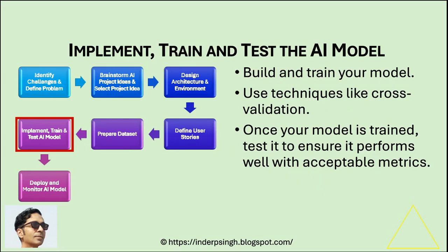Phase 6: Implement, train, and test the AI model. Use programming languages, libraries, and tools to build and train your model. For example, in machine learning projects like the anomaly detection project, you might implement an unsupervised learning algorithm to identify deviations from normal behavior in the software. Use techniques like cross-validation to ensure your model generalizes well to new or unseen data. Once your model is trained, test it to ensure it performs well with acceptable metrics.